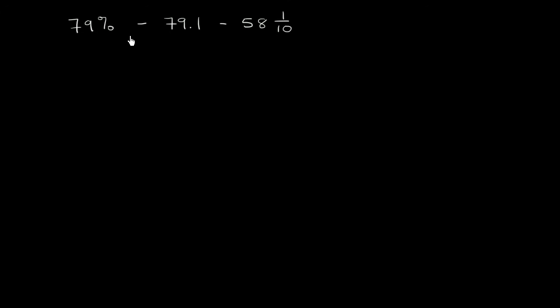And it seems like we could get all of these into a decimal format pretty easily. So let's go that way. So 79%, that literally means 79 per 100. If you wanted to write it as a fraction, it would be 79 over 100. But if you wanted to write it as a decimal, it's 79 hundredths, which we'd write down as 0.79. Now, 79.1 is already written as a decimal. So we'll just write it again. So minus 79.1.